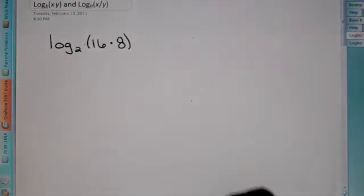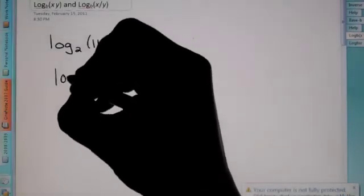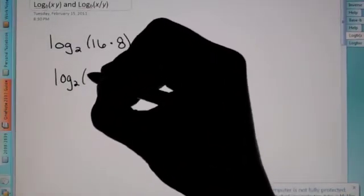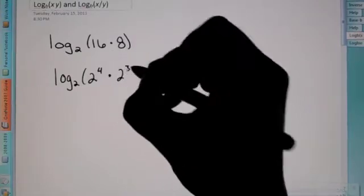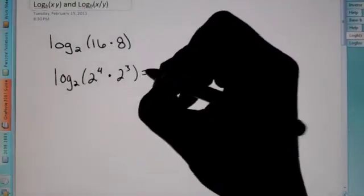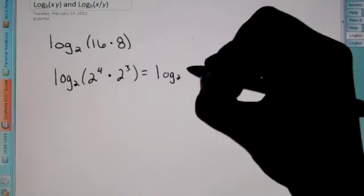just like we did in our last section, we can actually rewrite 16 with that base and call that 2 to the 4th and say that 8 is 2 to the 3rd. Now, we know that 2 to the 4th times 2 to the 3rd is 2 to the 7th,